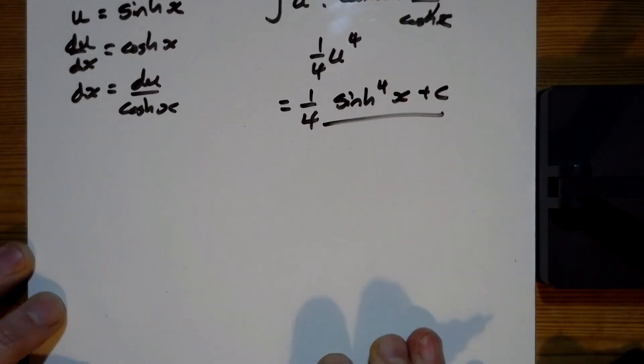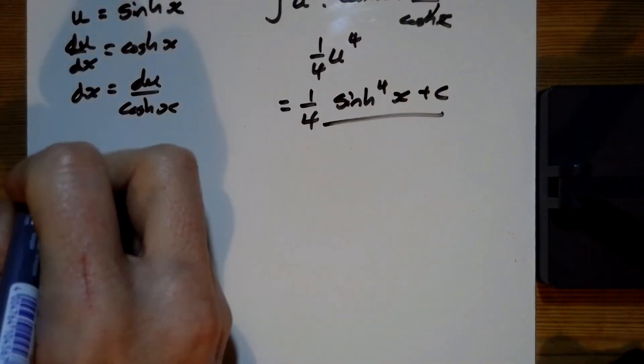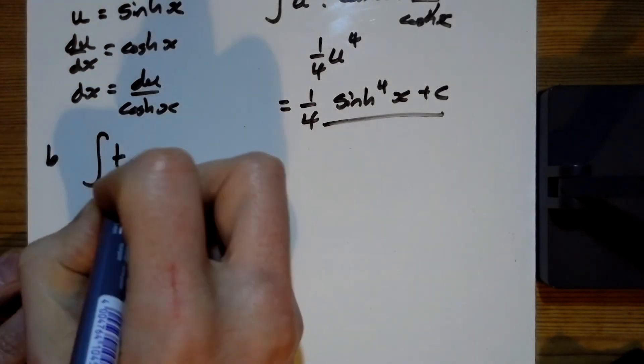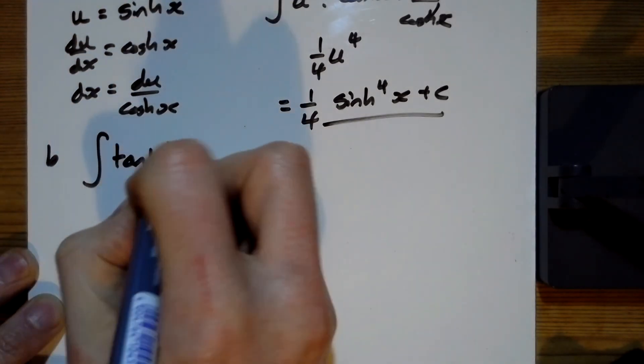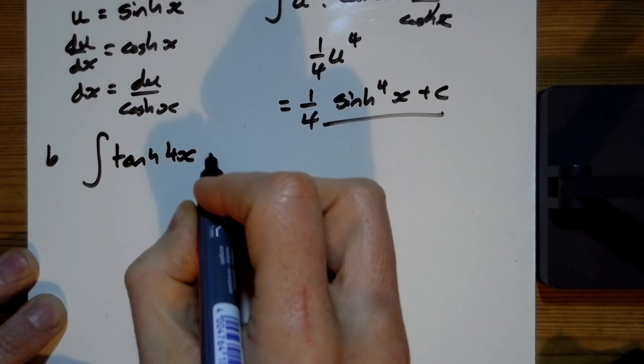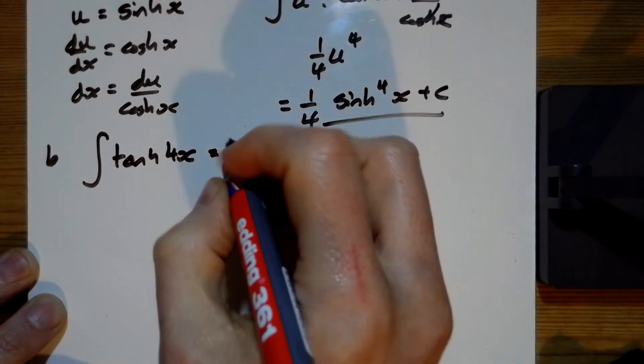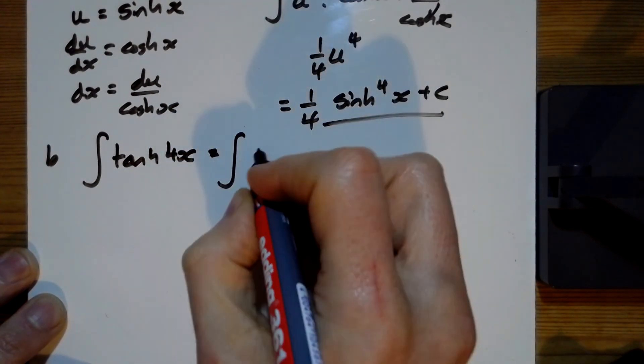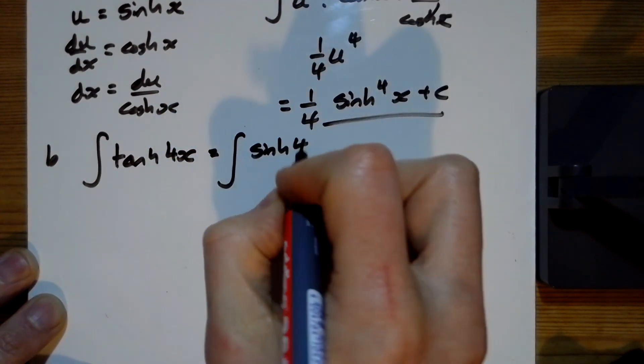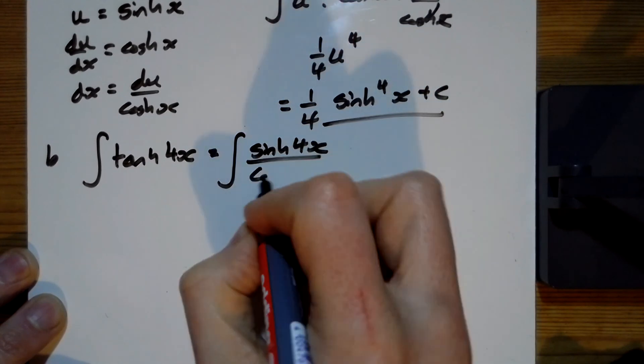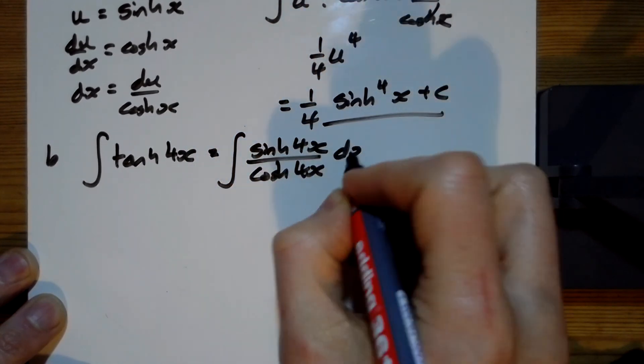We'll keep going for b as well. So for b, we're doing the integral of the tanh of four x. It's actually in the formula book, that one there, but we'll do it longhand this time. Should we get sinh four x over cosh four x dx?